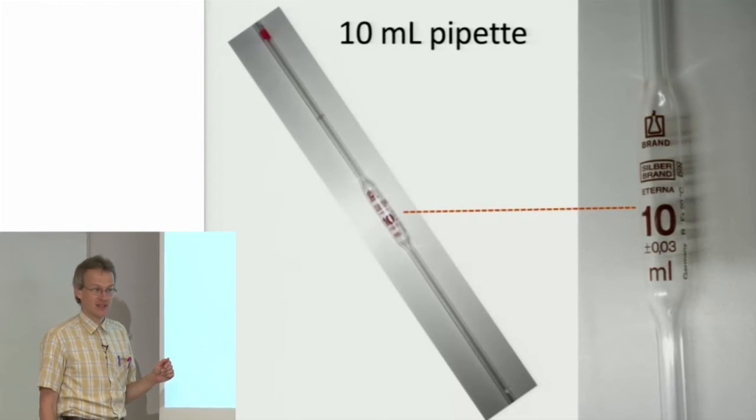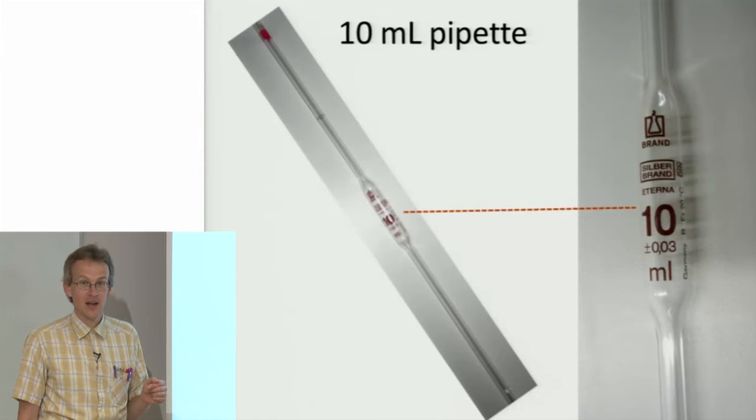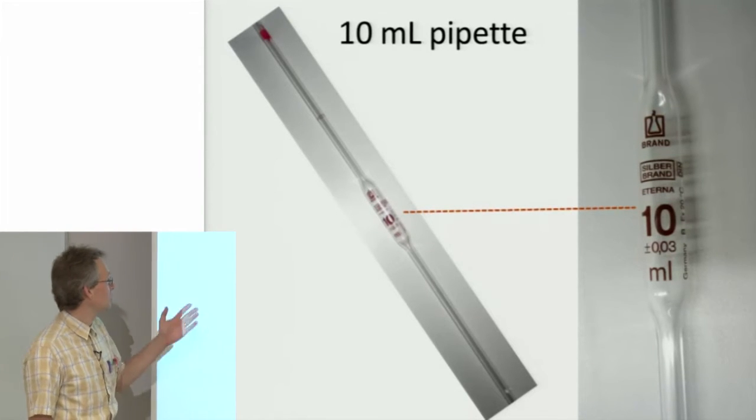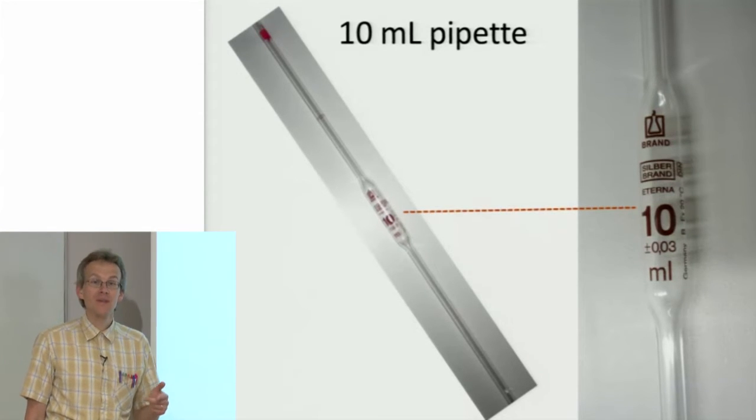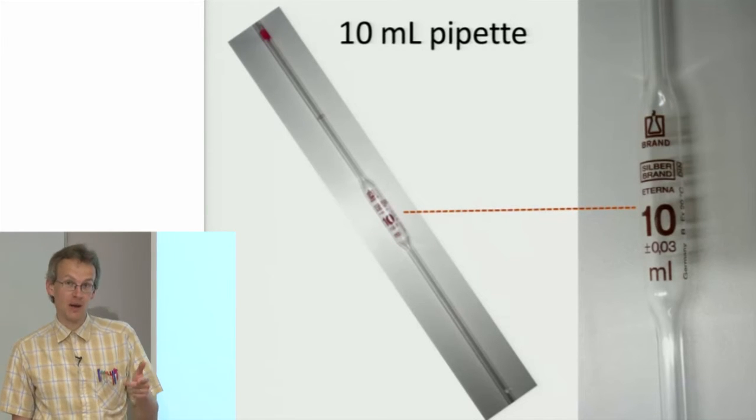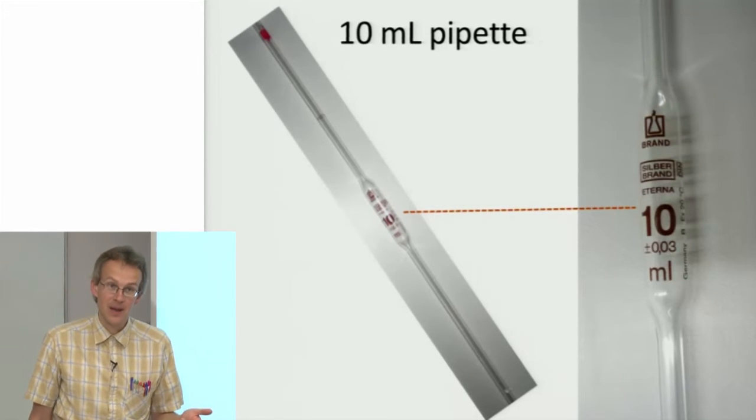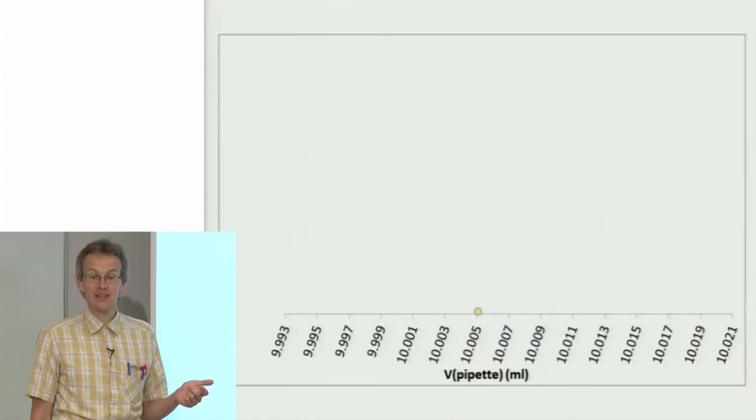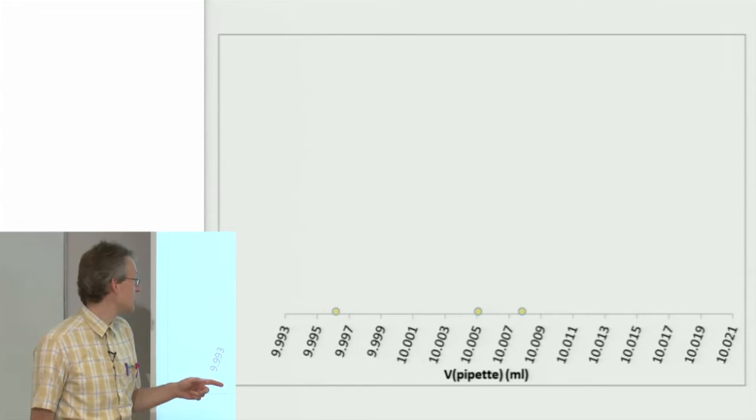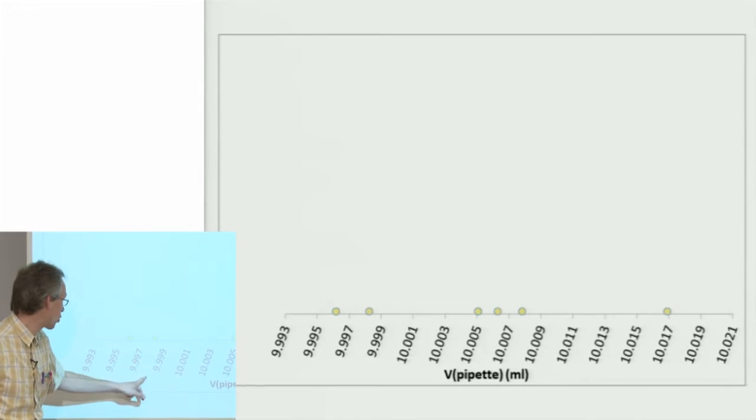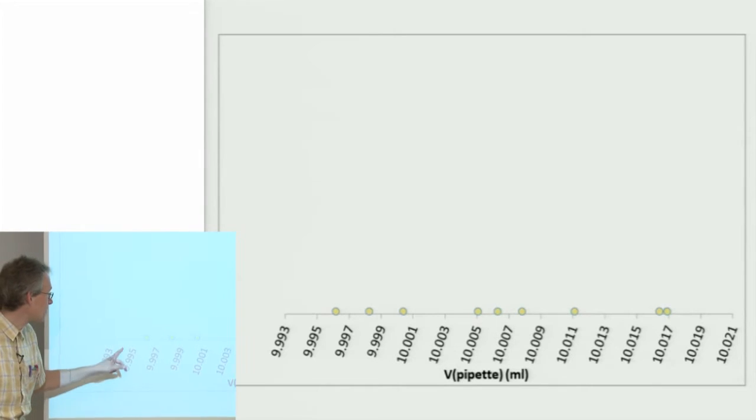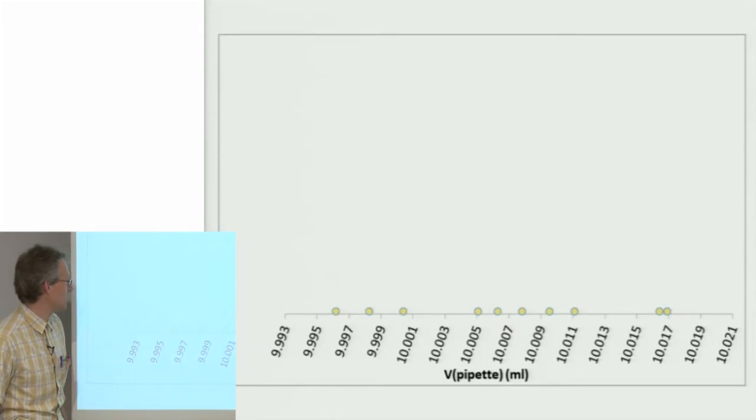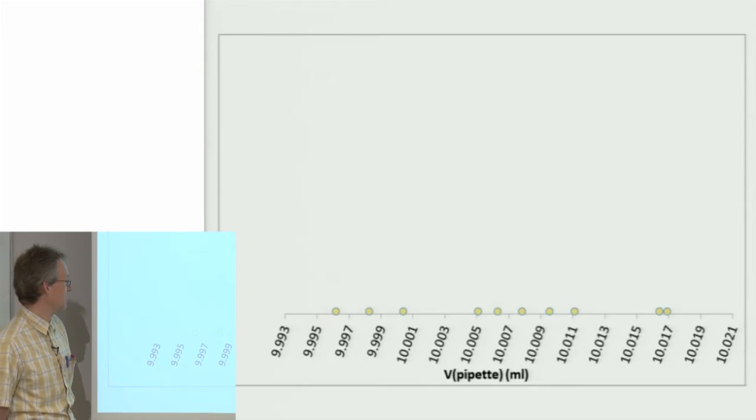Let us examine the normal distribution function more closely on the example of pipetting. We have a 10 milliliter pipette. Suppose we pipette several times, trying to pipette 10 milliliters every time. What happens is that every time we get a slightly different volume. It's always somewhere near 10 milliliters, but never exactly 10, and also it tends to be quite different at different times.